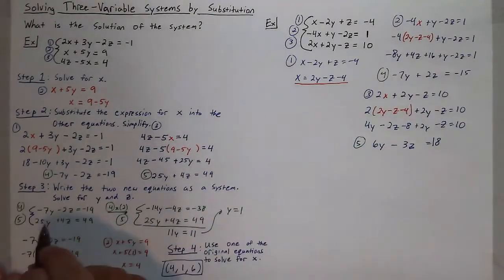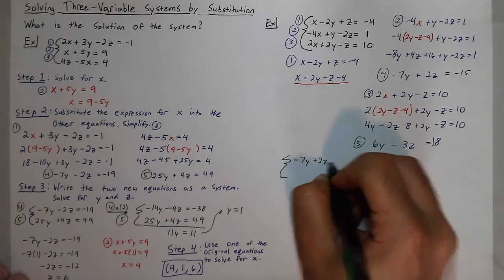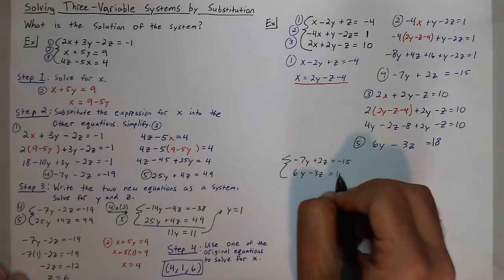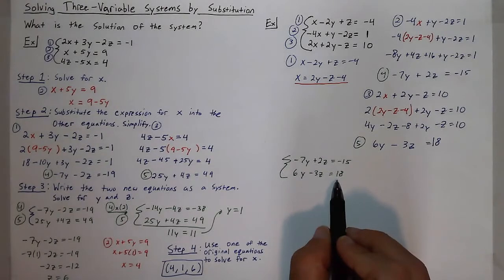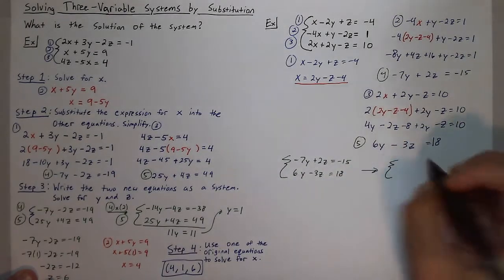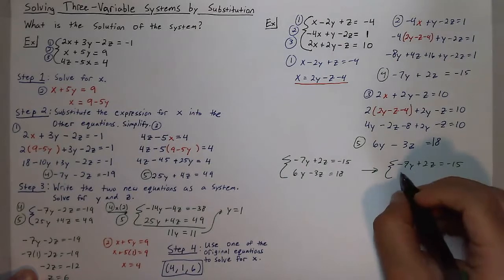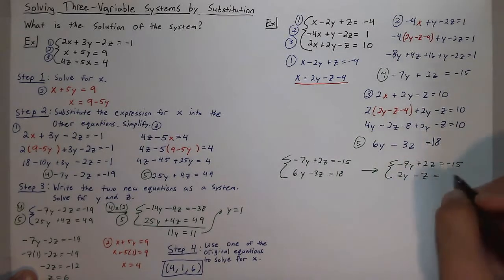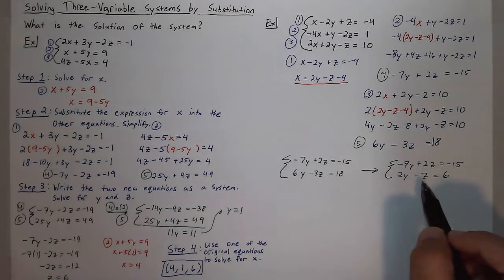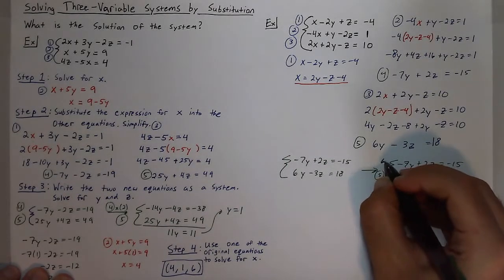I'll make up my new system just like I did earlier with my two new equations: negative 7y plus 2z is equal to negative 15, and 6y minus 3z is equal to 18. I notice that every term in equation 5 is a multiple of 3, so I can divide everything by 3 to create an equivalent equation: 2y minus z is equal to 6. This sets me up for a really nice and simple substitution for the second step.